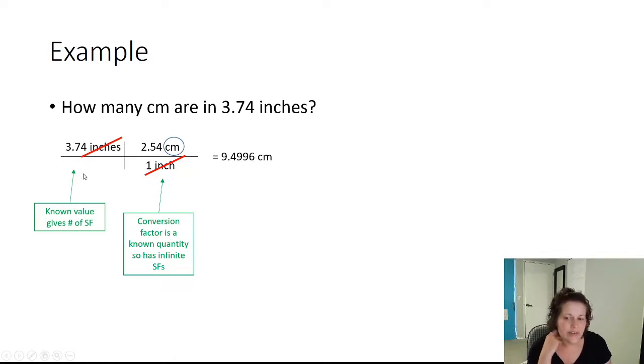So in this case, 3.74 inches has 1, 2, 3 sig figs: 3, 7, and 4. And so my answer is only going to get to have 1, 2, 3 sig figs, or 9.49.